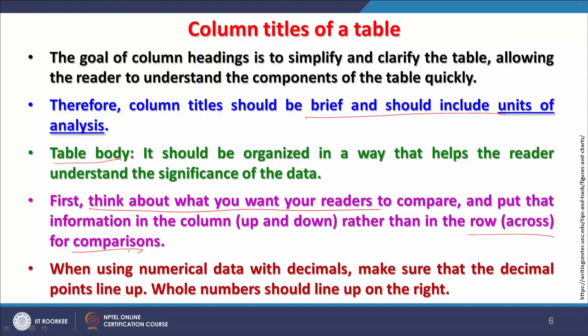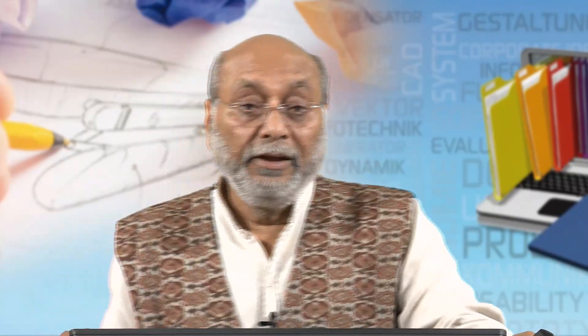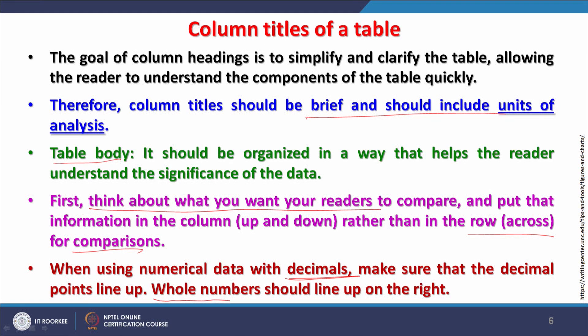If numerical data is there and it's possible to plot a graph, do so. If not, maintain consistency in decimal precision — for example, if using two decimal places, all rows should follow the same format, even if the value is 0.00. Inconsistency in decimal places is not good. Keep precision consistent throughout, and whole numbers should be aligned on the right side of the column.